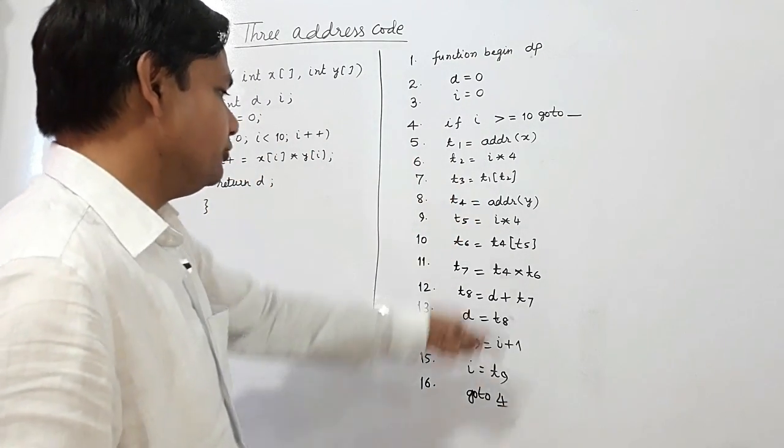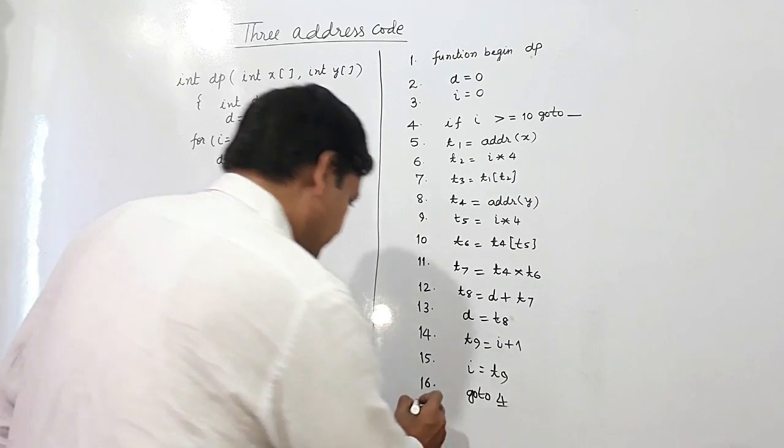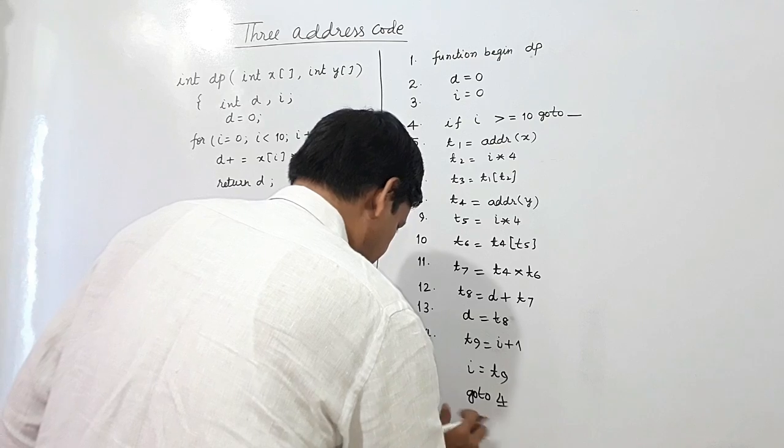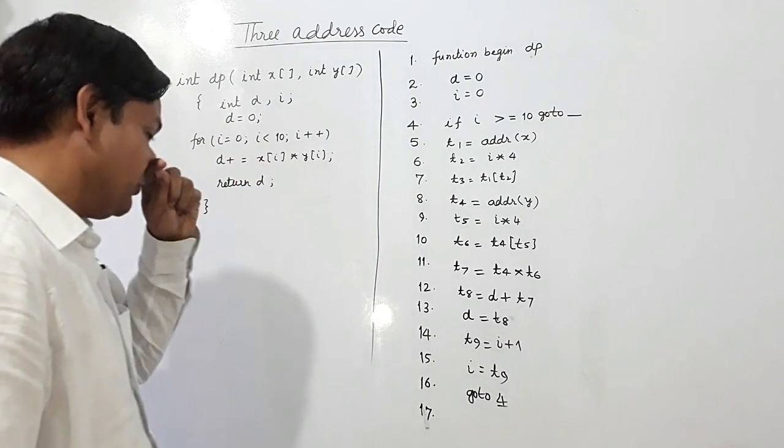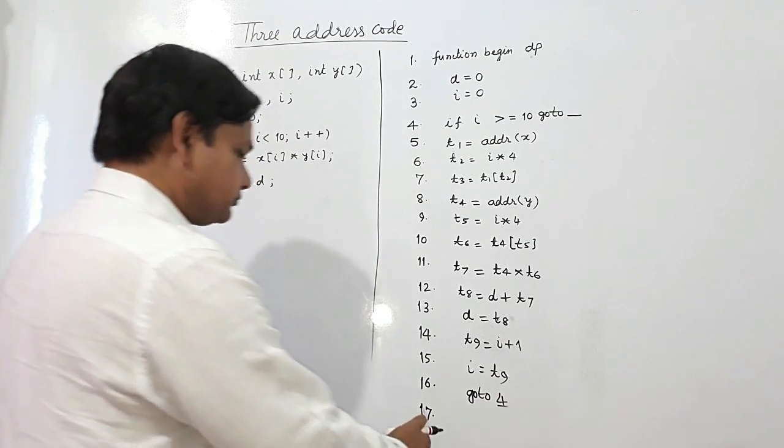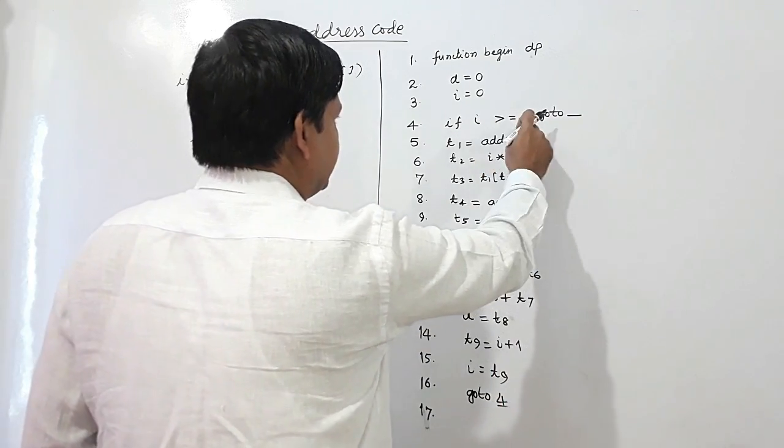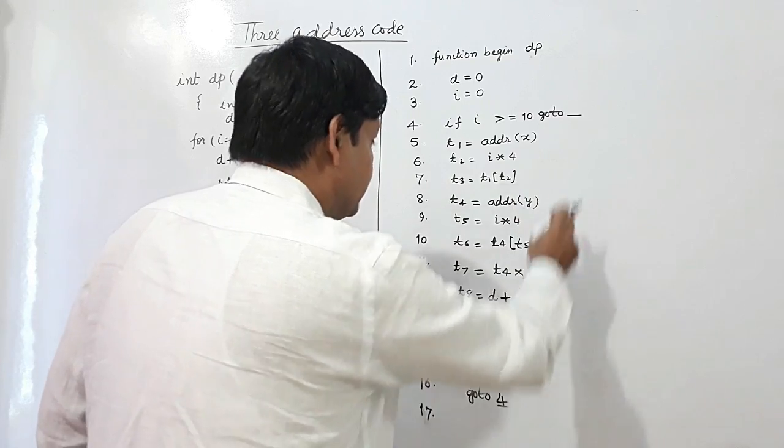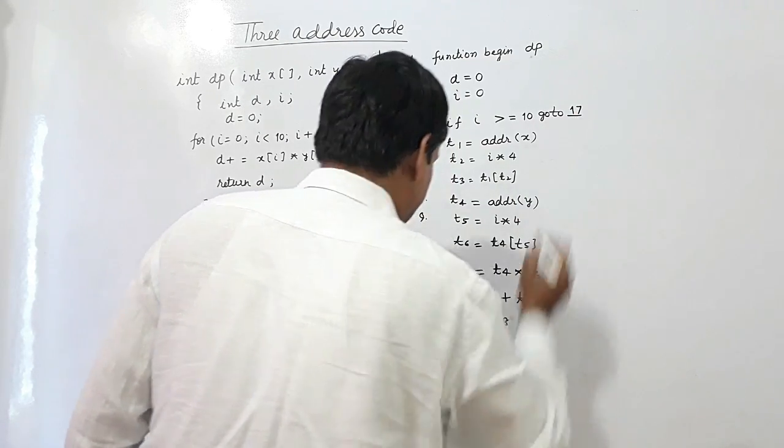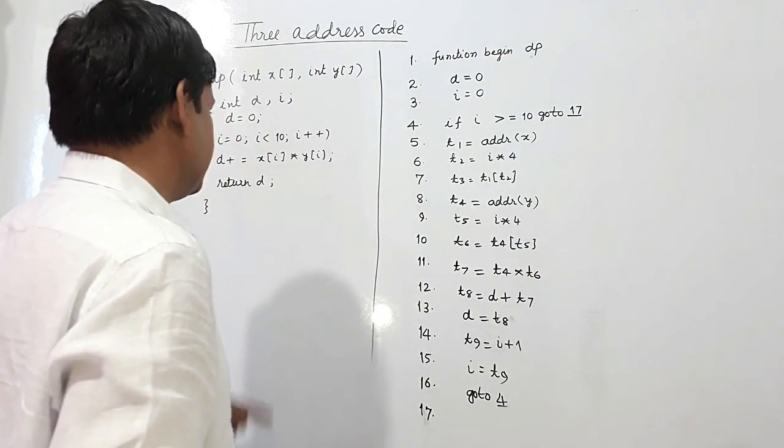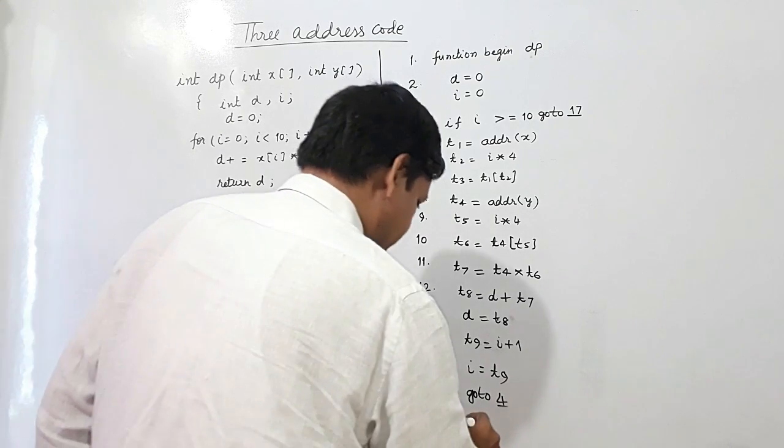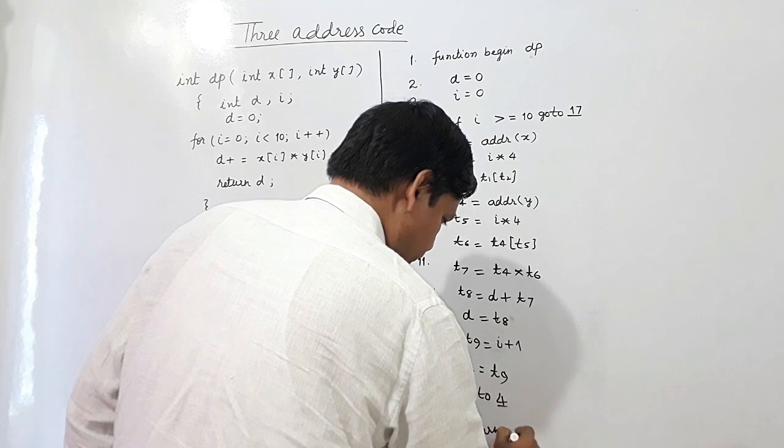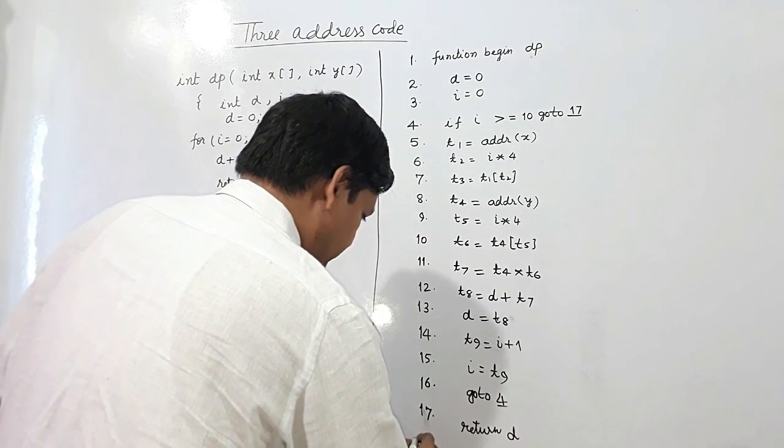This loop will be continuing here. If this completes, what will happen? If this condition becomes true, what will happen? It will go at line number 17 and what line number 17 says: return d.